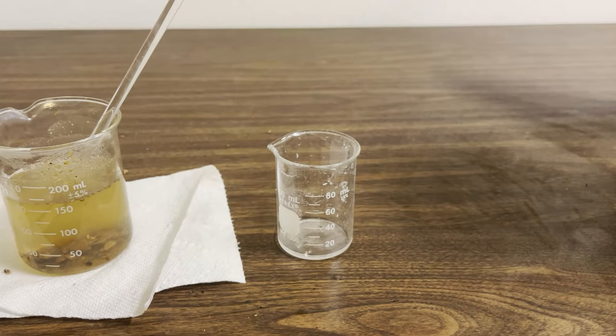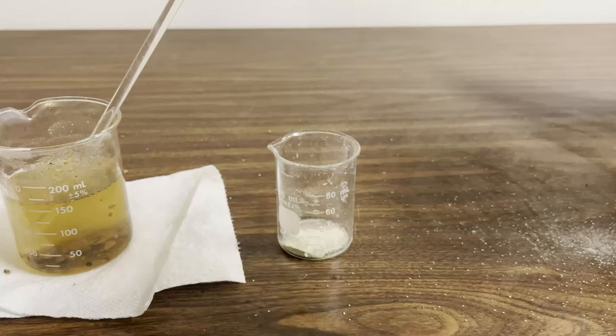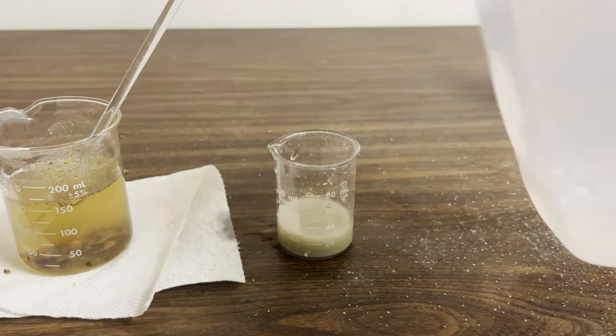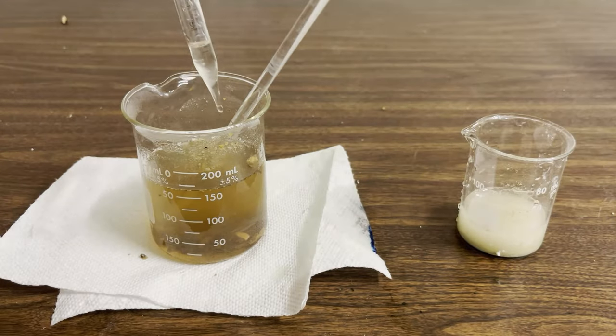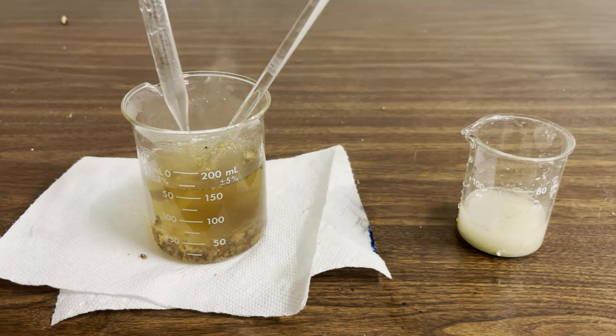While waiting for the oak gall, I make a solution of ferrous sulfate in another beaker. I also add a little bit of hydrochloric acid into the first beaker to hydrolyze the tannins.